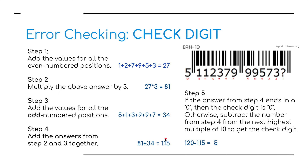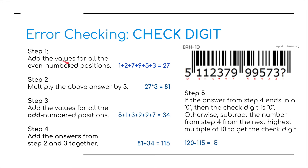I'm going to talk about one of these methods and how we calculate the check digit. We've got an ISBN 13 number here, and we need to find out what we're going to use as our check digit. We've been given a calculation. Step one: we're going to add the values for all the even number positions. These have been labelled here — positions 12, 10, 8, 6, 4, 2 — giving us a total of 27. We then multiply that by 3, as per the calculation, to get 81.